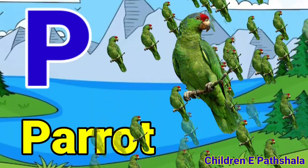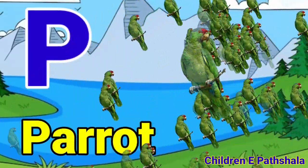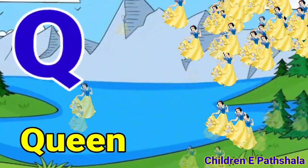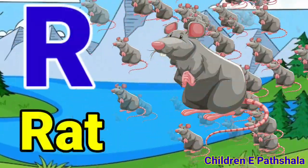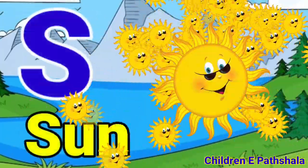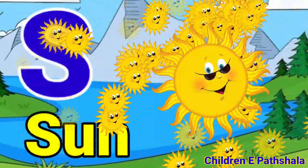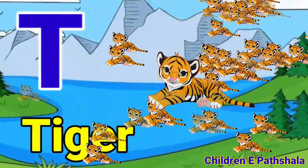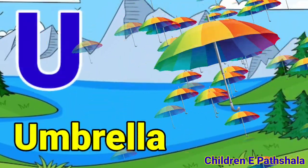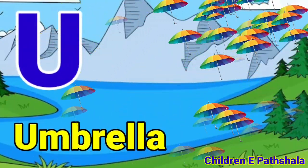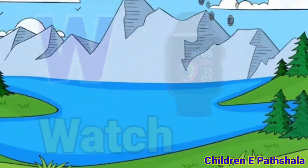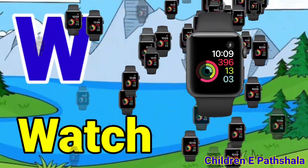P for parrot, Q for queen, R for rat, S for sun, T for tiger, U for umbrella, V for van, W for watch, X for x-ray.